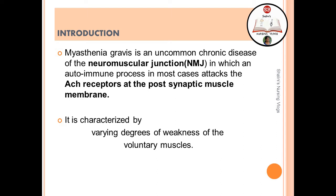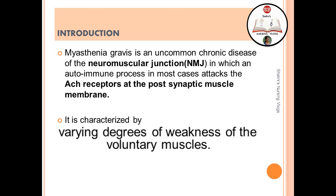In myasthenia gravis, an autoimmune process in most cases attacks the acetylcholine receptors at the post-synaptic muscle membrane. Key points to remember: it is a disease of the neuromuscular junction, it attacks the acetylcholine receptor sites, and it is characterized by varying degrees of weakness of voluntary muscles.